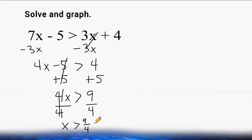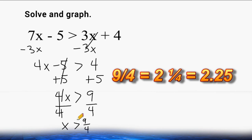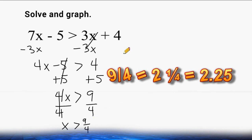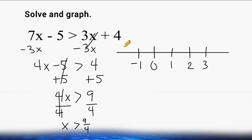That leaves us with 9 fourths or 9 quarters. If you were to rename 9 quarters as a mixed number, that would be 2 and a quarter. Let's go ahead and graph our inequality — x is greater than 9 fourths. We start by putting 0 right here, then 1, 2, and 3, since our answer is just a little bit bigger than 2, and a negative 1 here. Now our inequality symbol does not have an equal to sign, so right where 2 and a quarter is, we are going to put an open-ended circle. And all of the values greater than 9 quarters would be located to the right.